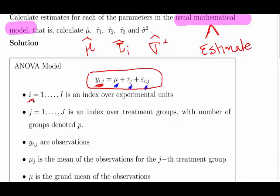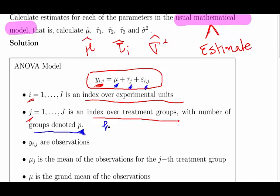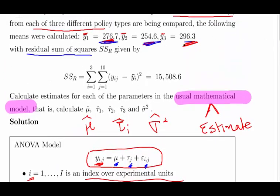The index i runs over the experimental units — one through ten. The index j runs over the treatment groups. For simplicity, I denote the number of groups as P (sometimes written as K). This is our observation, and this is the mean of the observations for the j-th treatment group — the true mean. Each group has a true mean, and we have the sample means above as estimates of those true means.